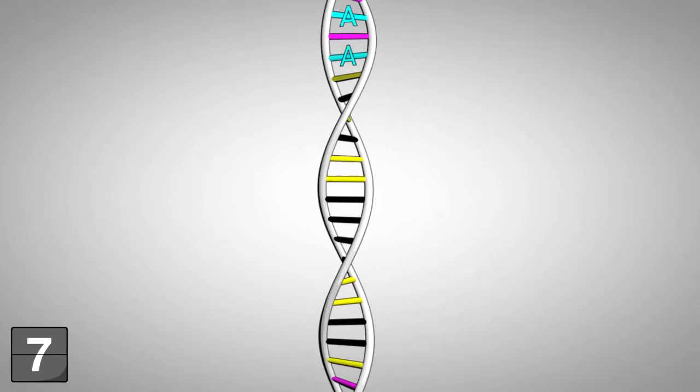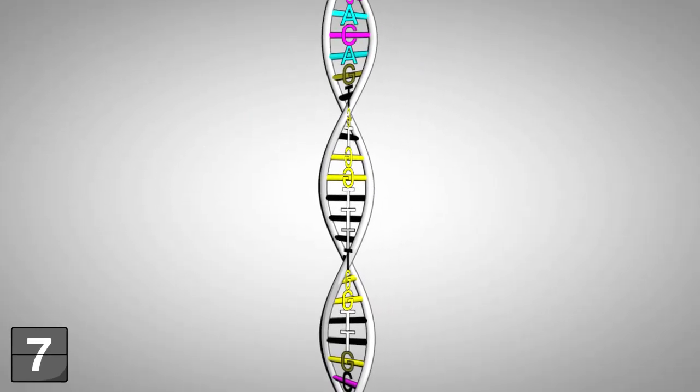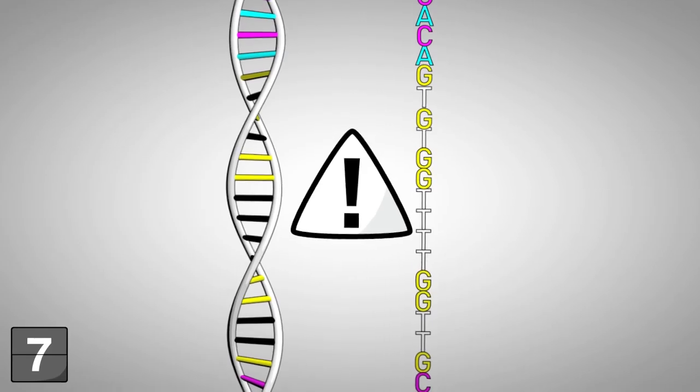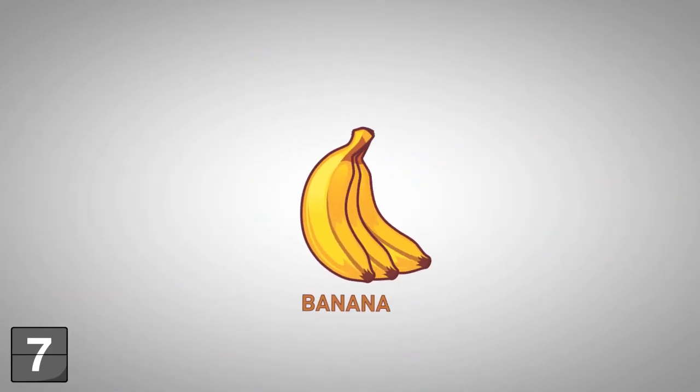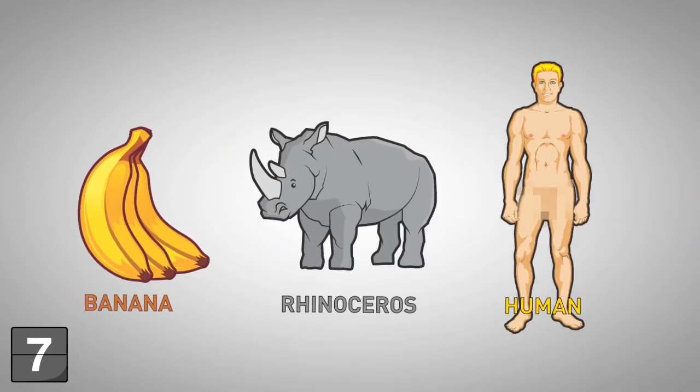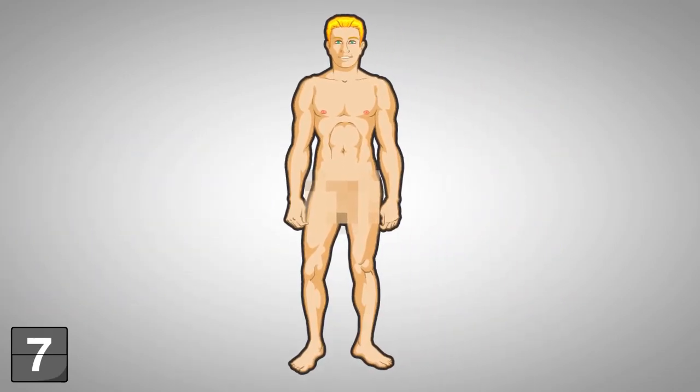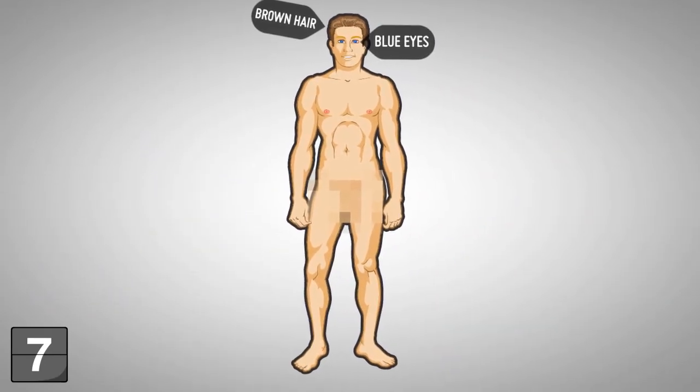The particular order of A's, T's, G's, and C's is extremely important as it determines whether you are a banana, rhinoceros, or a human. It also determines whether you have brown hair, blue eyes, or green skin.